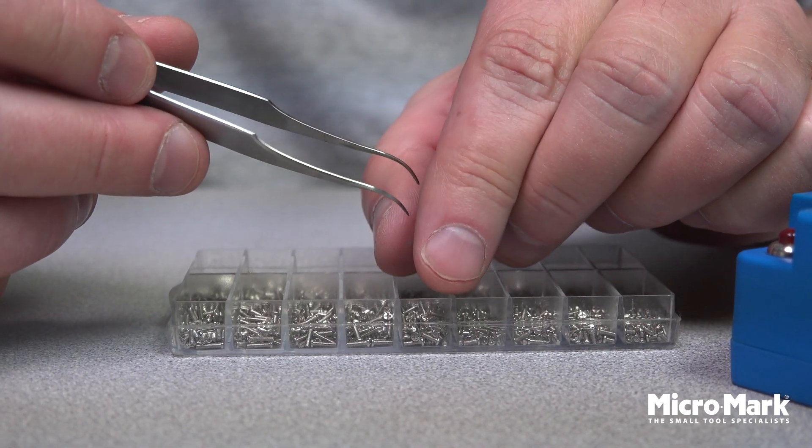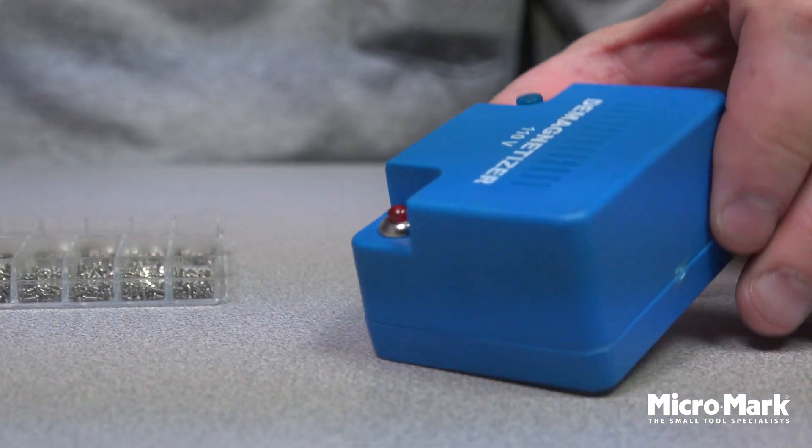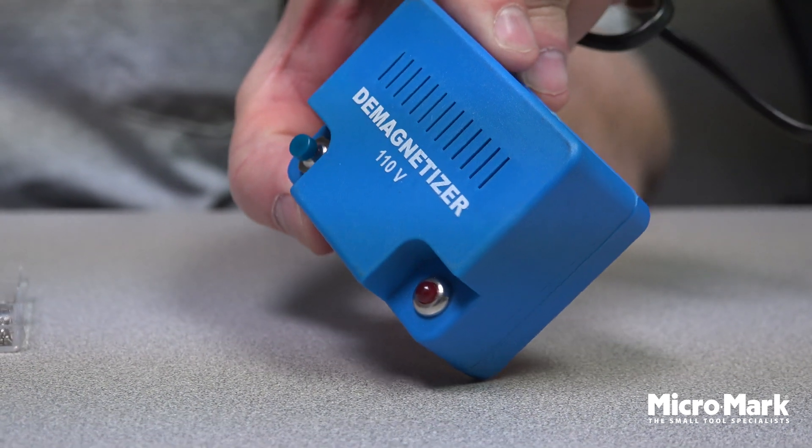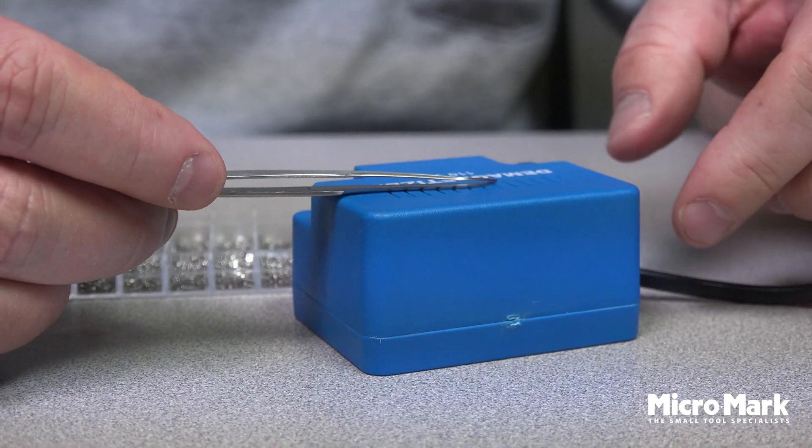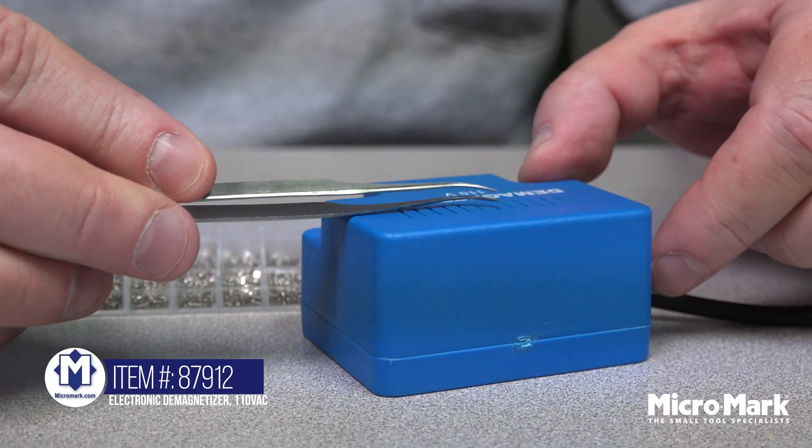So what Micromark offers to help you is our demagnetizer, which will demagnetize this tweezer. Put it on top of it, push the button, wipe it across.